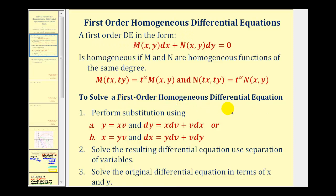For a quick overview before we do our example: the first step is to make sure that we do have a homogeneous differential equation by making sure functions M and N are both homogeneous functions of the same degree. Then if it is homogeneous, we can solve it by performing a substitution and then using separation of variables.